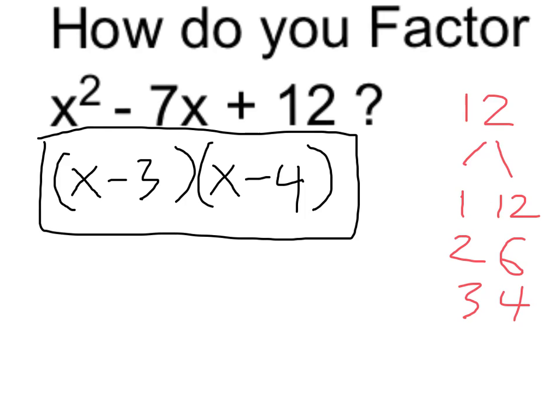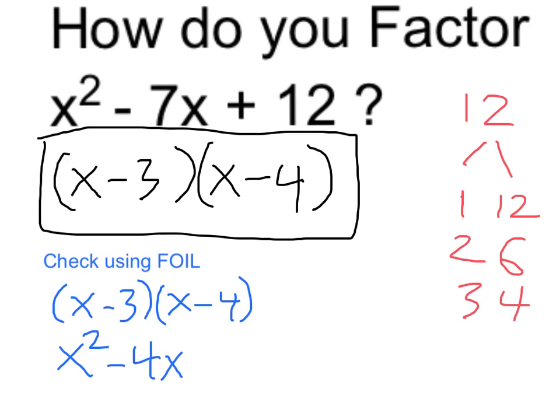We can check that by actually doing the FOIL process. So doing so, x times x is equal to x squared. If I do x times, remember I have to take the minus into account, so it's x times minus 4, so it's going to be minus 4x.